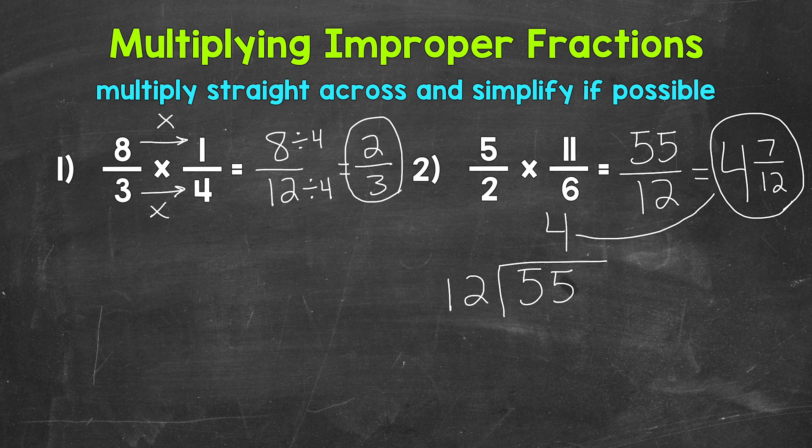4. So, that's the whole number part of our mixed number. 4 times 12 is 48. 55 minus 48 gives us a remainder of 7. That goes right here. Then we keep the denominator of 12 the same. So, we end up with 4 and 7 twelfths.